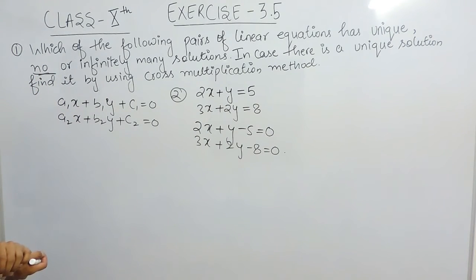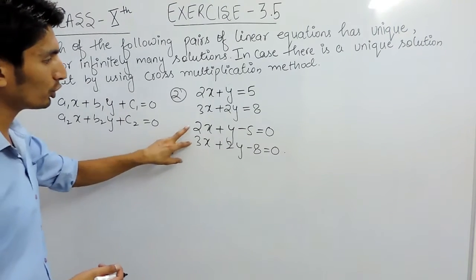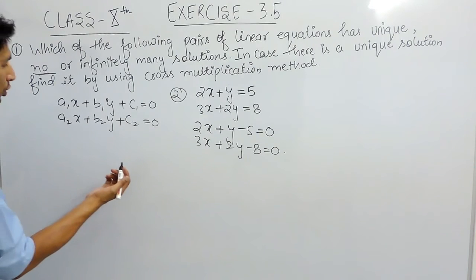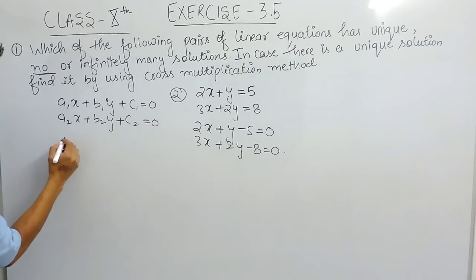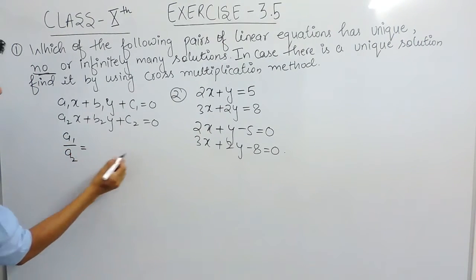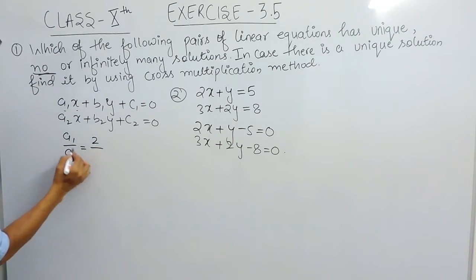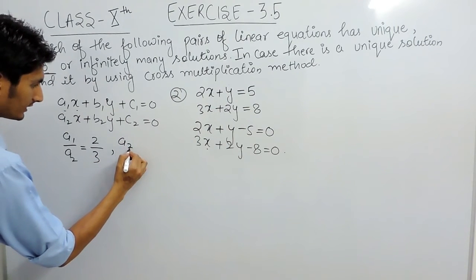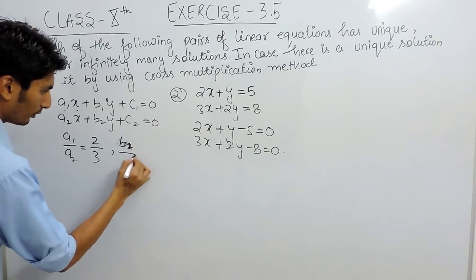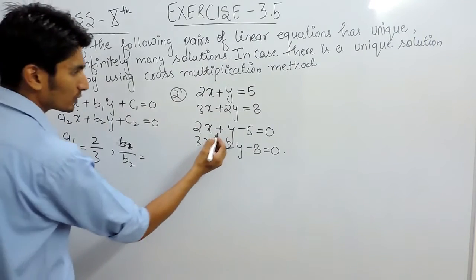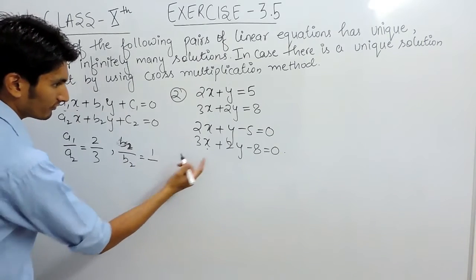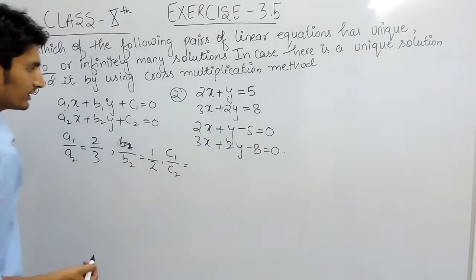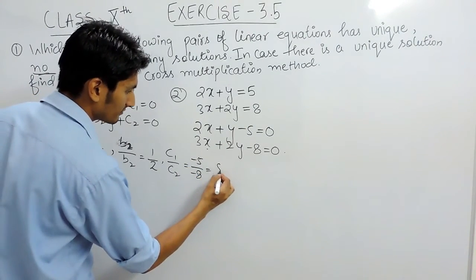To find whether they are intersecting, parallel, or coincident lines, you have to find the ratio of the coefficients. So a1 upon a2: a1 is the coefficient of x which is 2, and a2 is the coefficient of x in the 2nd equation which is 3. Then b1 upon b2: b1 is the coefficient of y in the first equation which is 1, and b2 is the coefficient of y in the 2nd equation which is 2. After that, find the ratio c1 upon c2, which is minus 5 and minus 8, giving 5 by 8.